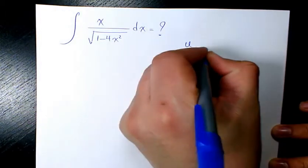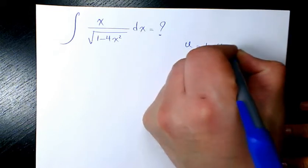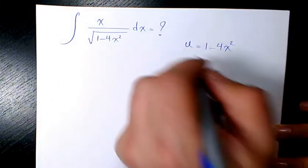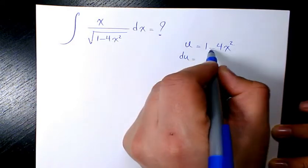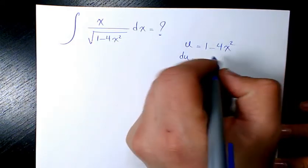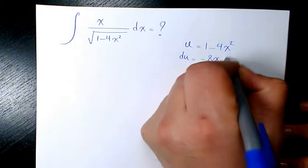I'm going to have u equals to 1 minus 4x square. So I need to find out the derivative of both sides. Derivative of u is going to be du. Derivative of 1 minus 4x square is going to be negative 8x dx.